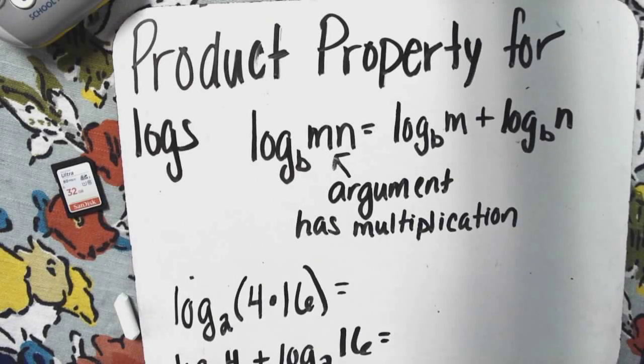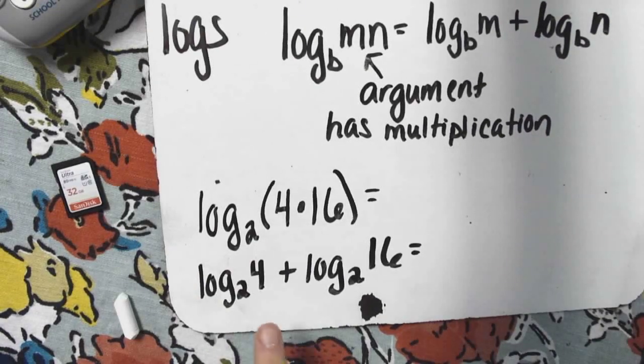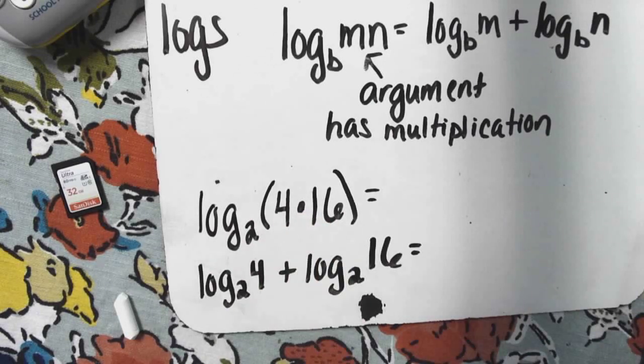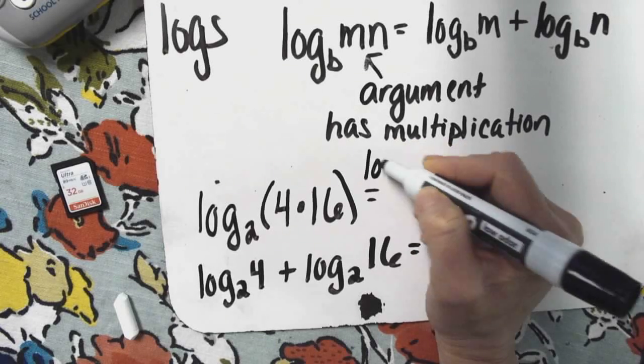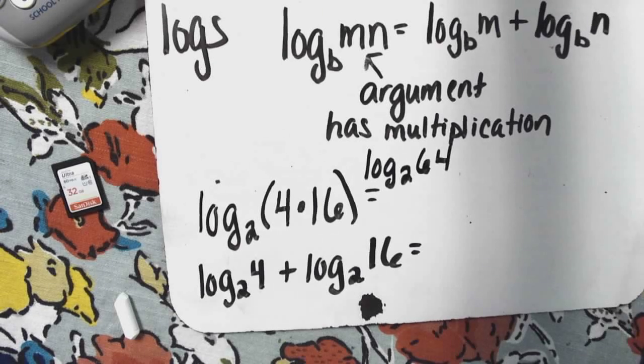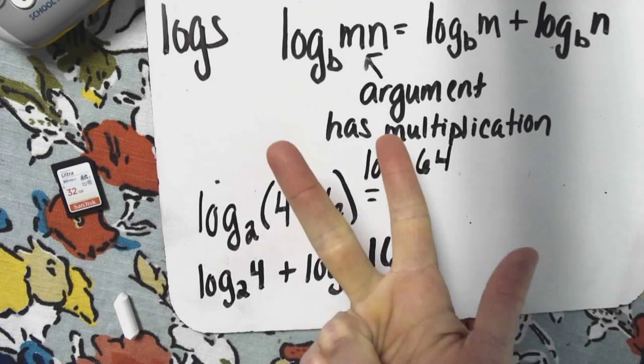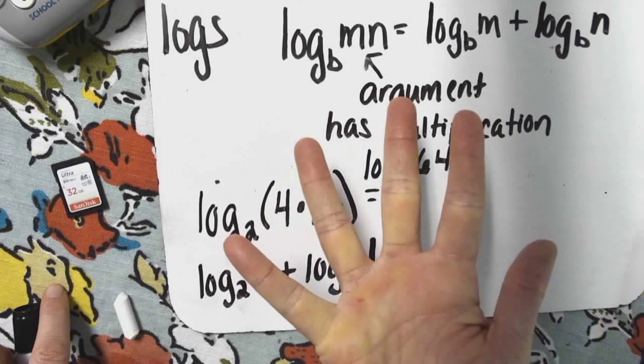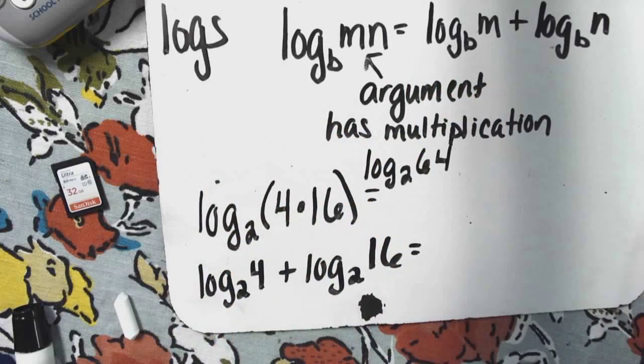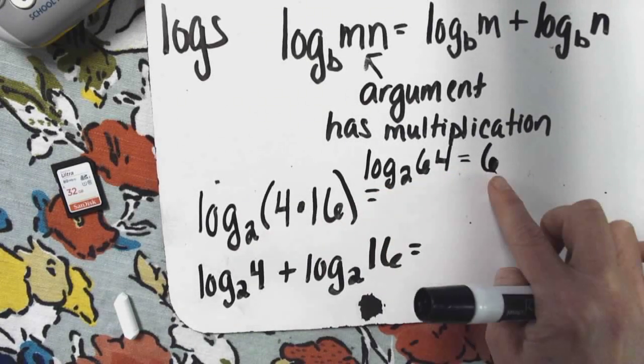Now I'm going to show some number examples so you can see how this works. First off, if you look here, log base 2 of 4 times 16. Well, 4 times 16 is 64, so this problem is log base 2 of 64. How many twos does it take multiplying together to get 64? It took six twos multiplying together to get 64, which means log base 2 of 64 equals 6.